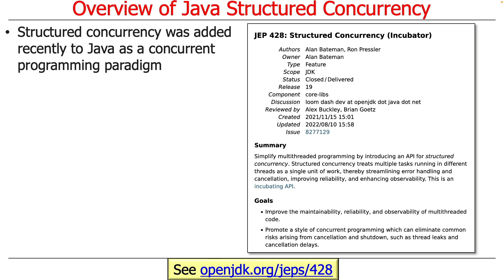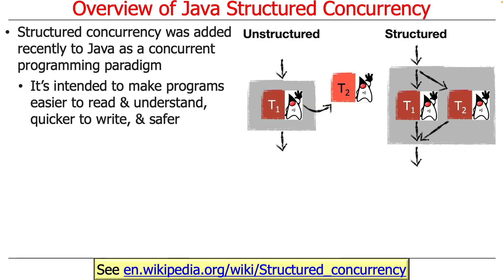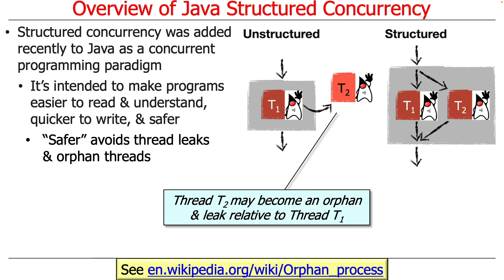You can take a look at this link to find out more about how structured concurrency is designed. The goal of structured concurrency is to make concurrent programs easier to read and write, easier to understand, and safer. Safer means avoiding thread leaks and orphan threads.